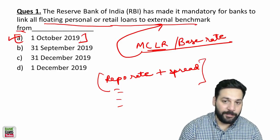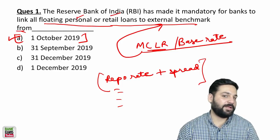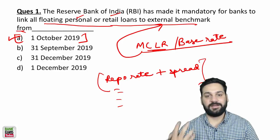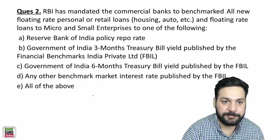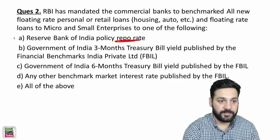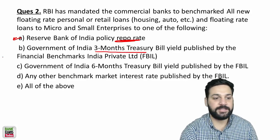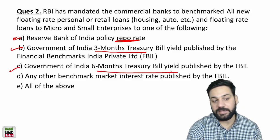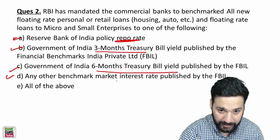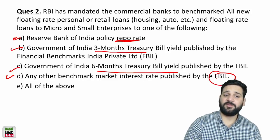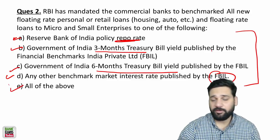From 1st October 2019, all banks providing personal retail loans or loans for micro and small enterprises need to link the interest rate to external benchmarks. The external benchmark can be the repo rate of RBI, the Government of India's three-month T-bill yield, the six-month T-bill yield, or any other benchmark market interest rate published by FBIL — Financial Benchmark India Private Limited.